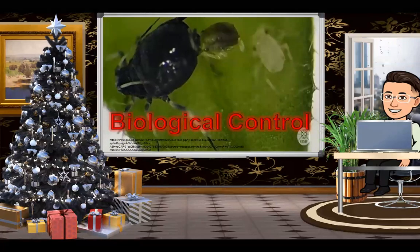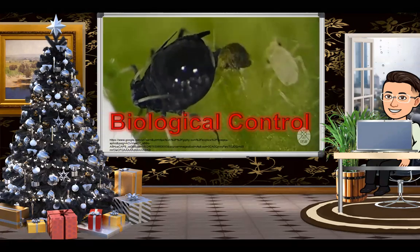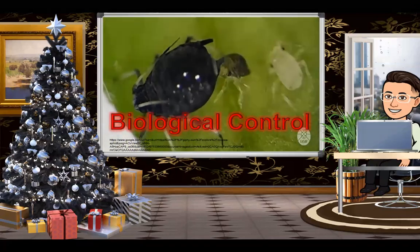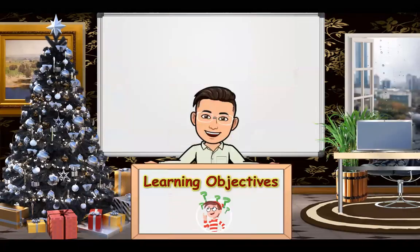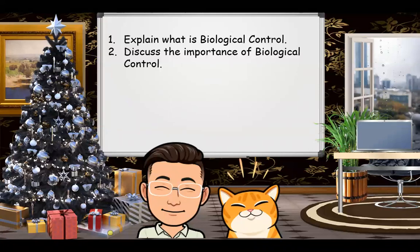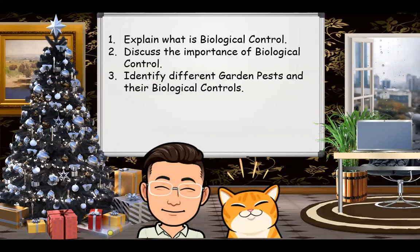Our topic for today is biological control. This is lesson number nine in the hydroponics topic. The learning objectives are: number one, explain what is biological control; number two, discuss the importance of biological control; number three, identify different garden pests and their biological controls; and number four, identify the different beneficial insects.